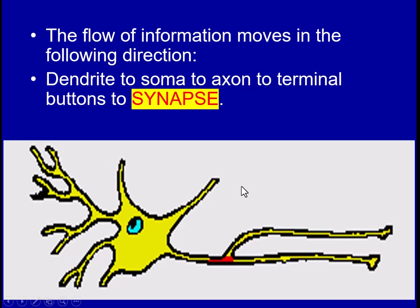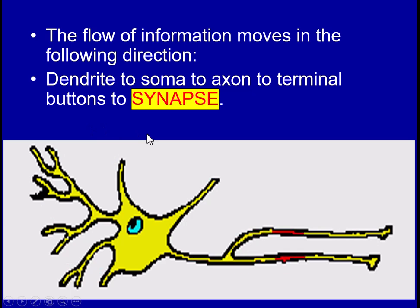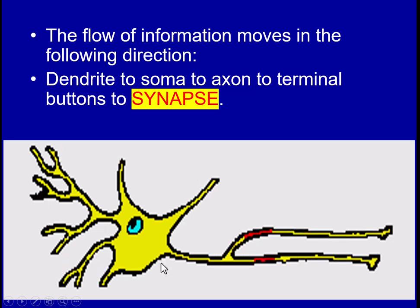The flow of information in neuronal activity moves in the following direction: from the dendrite, then to the soma, then to the axon, to the terminal button, and finally to the synapse. The neuron receives information at the dendrite, sends it to the soma, then to the axon, and at the terminal button this information is transmitted to another neuron.